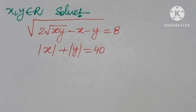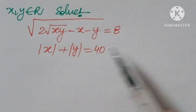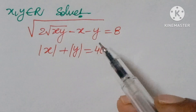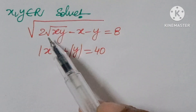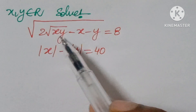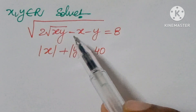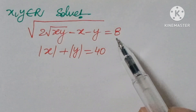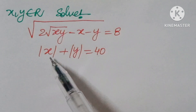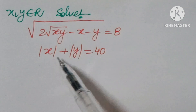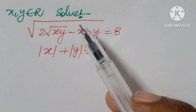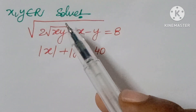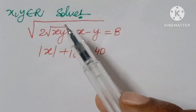Hello, welcome back to NCG Max. Today we are looking at an olympiad problem. The question is: given square root of (2√(xy) − x − y) = 8, and |x| + |y| = 40. You have to solve for x, y belonging to real numbers.